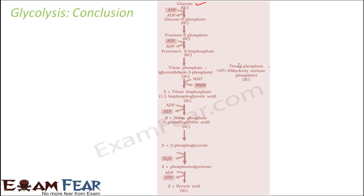In the next step, one isomer was also converted into the other, giving two molecules of the same product. This then got converted with release of ATP, then into 2-phosphoglycerate, which upon hydrolysis formed PEP — phosphoenol pyruvate — and which finally formed pyruvic acid.